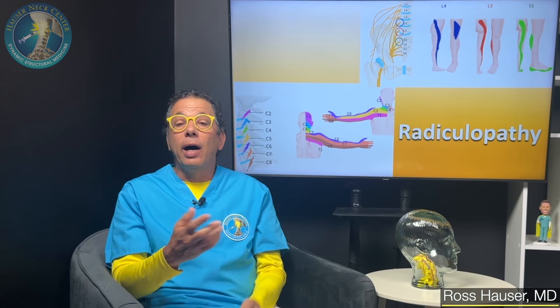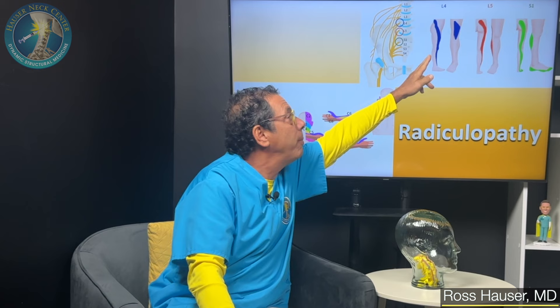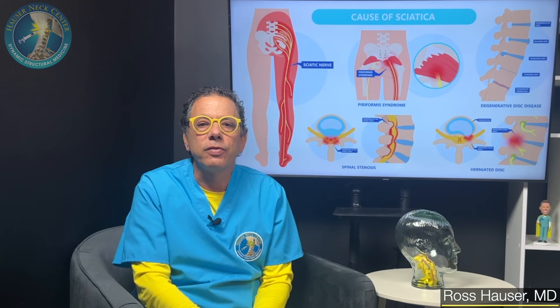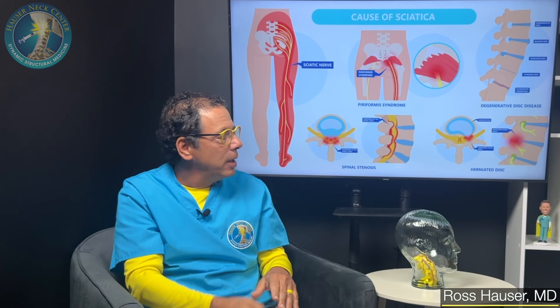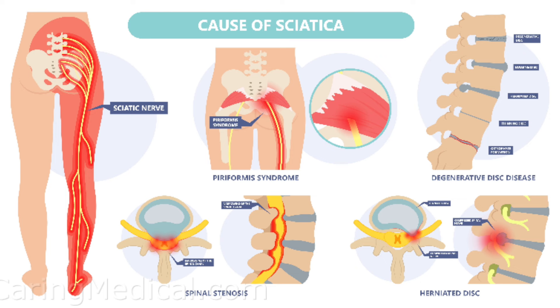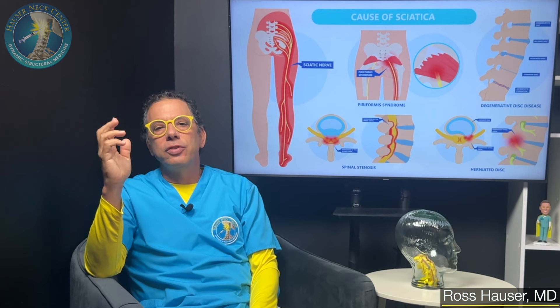One of the most common conditions people have is sciatica — pain from the back going down the leg. The sciatic nerve comes from the L4, L5, S1 nerve roots. Following Hauser's Law, the causes of sciatica from traditional medicine include herniated disc, degenerative disc, piriformis syndrome, and spinal stenosis. When patients come to us, it's usually because traditional therapies like physical therapy, exercise, steroid shots, and radio frequency procedures weren't effective.